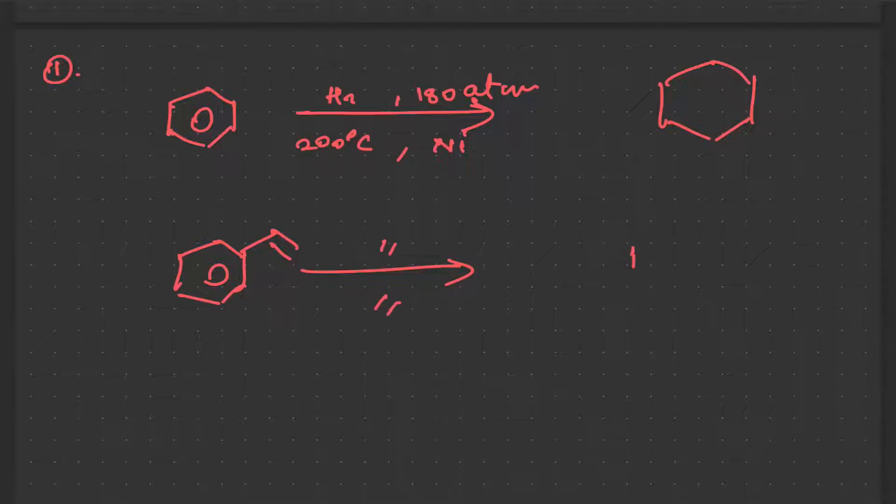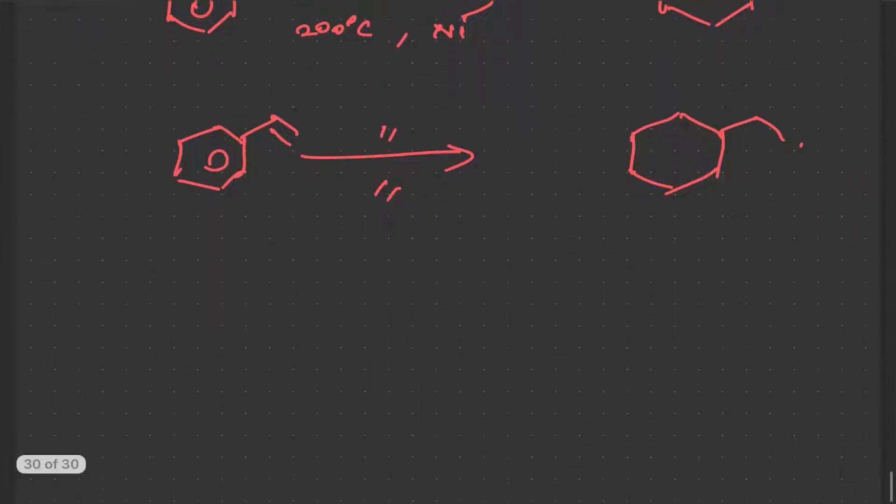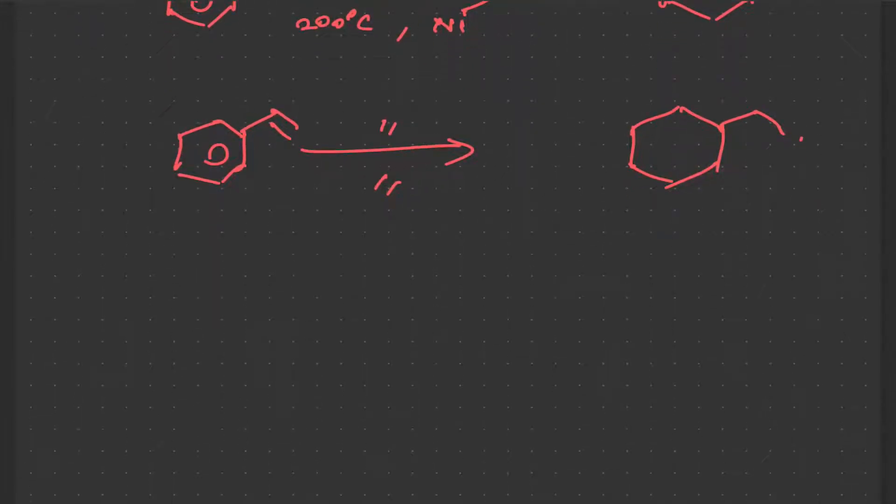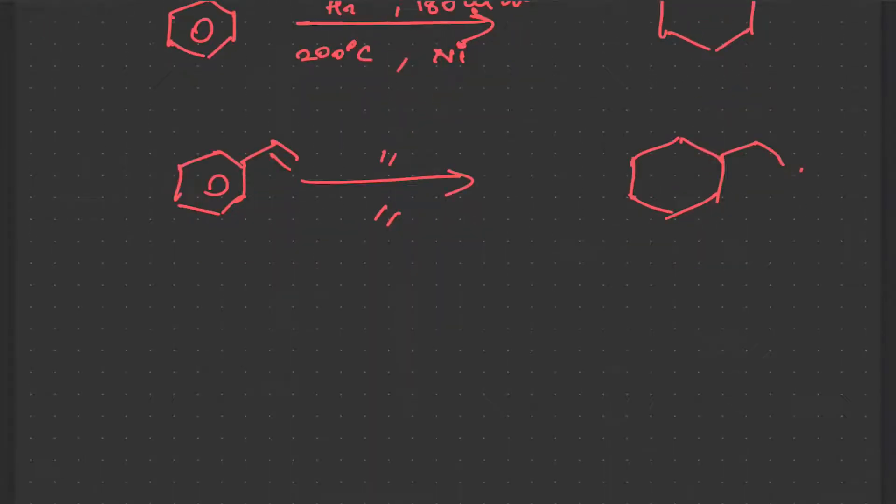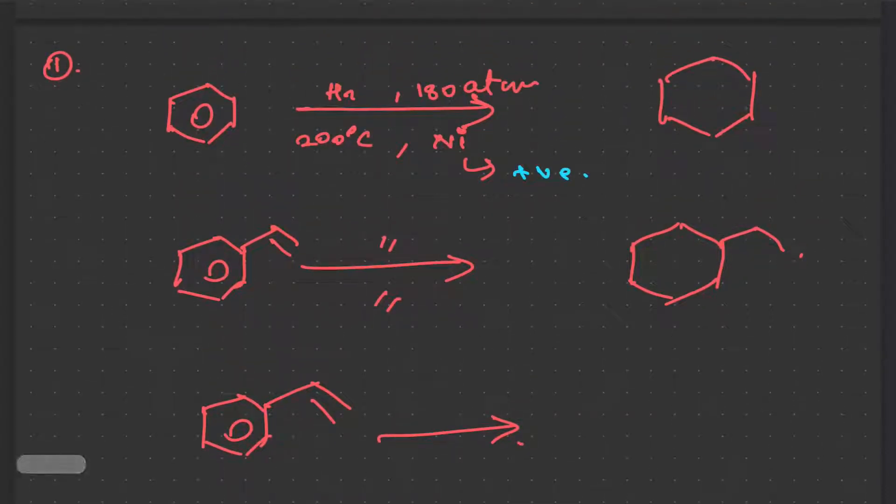The reagent is the same, so what would happen? This double bond will be hydrogenated, so you get this. Here nickel is acting as a catalyst. This you would have studied in detail or you would study in the hydrocarbon chapter very much in detail, why nickel acts as a catalyst. Nickel acts as a positive catalyst in this case, so that's why all the, even the ring, is hydrogenated. In this case as well, positive catalyst, so even the ring is hydrogenated.